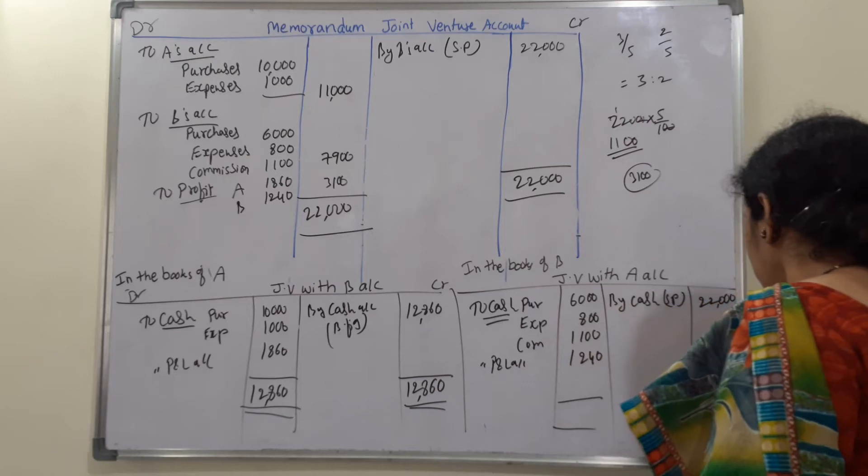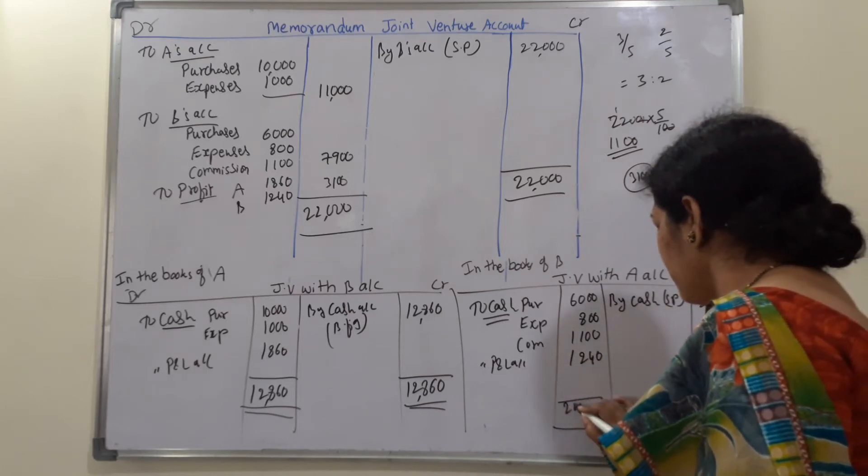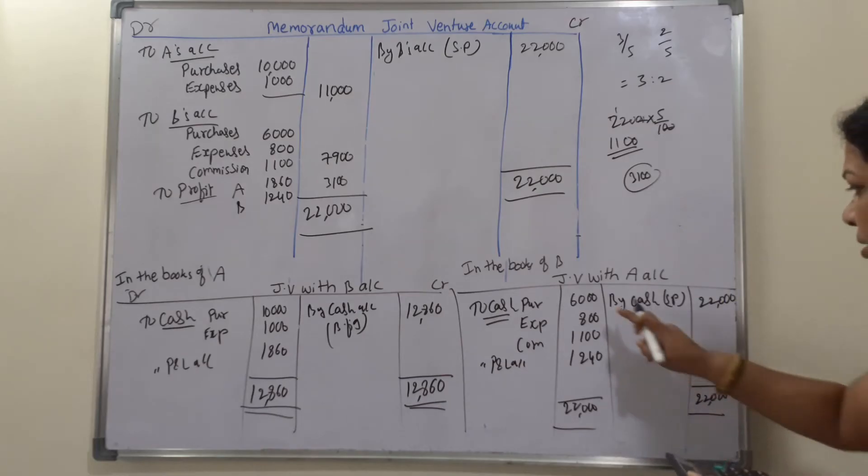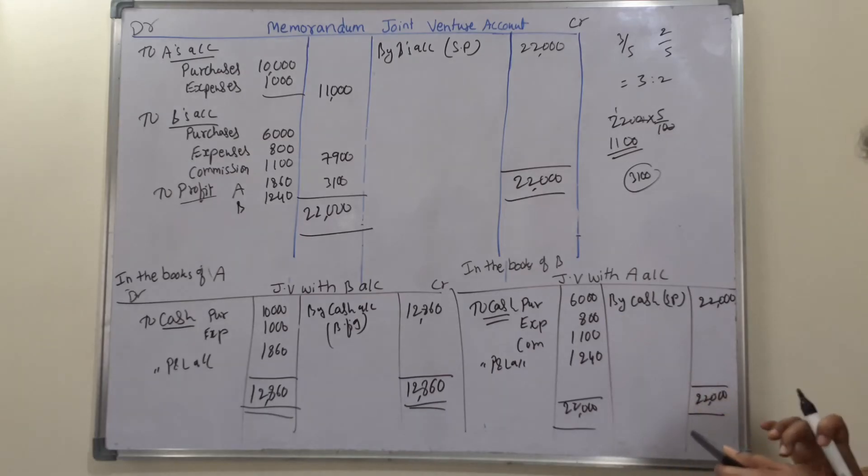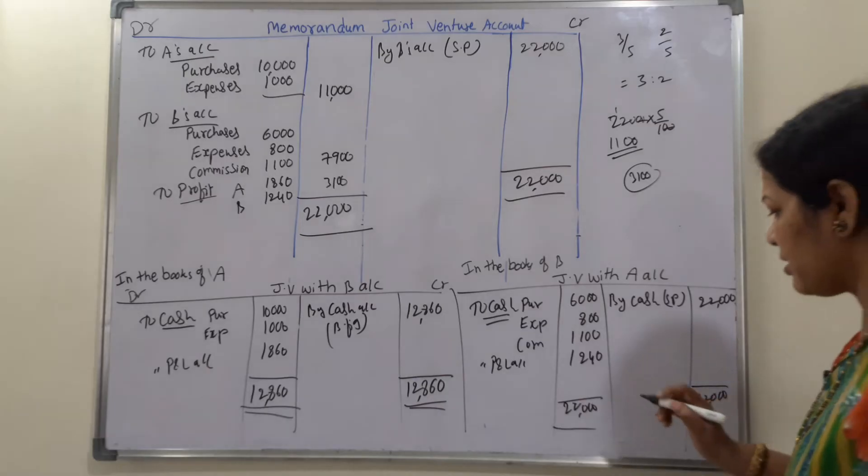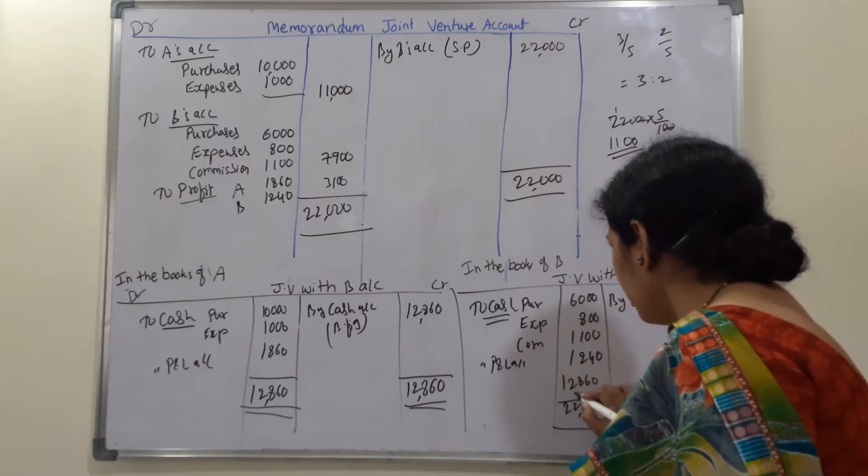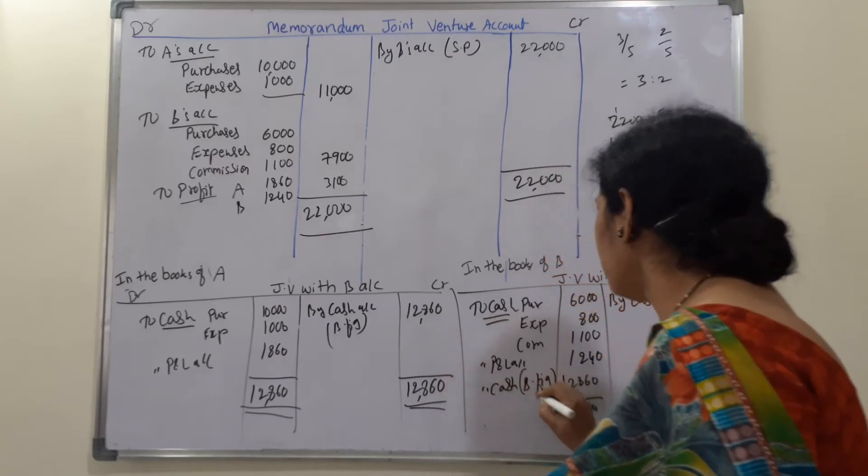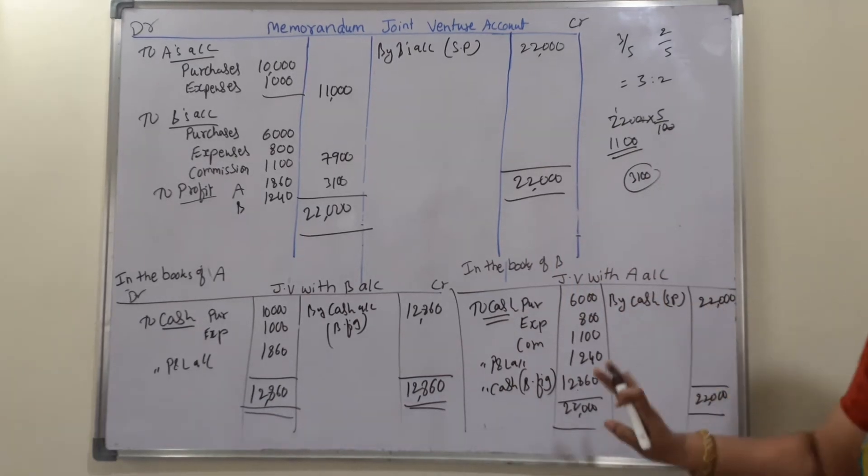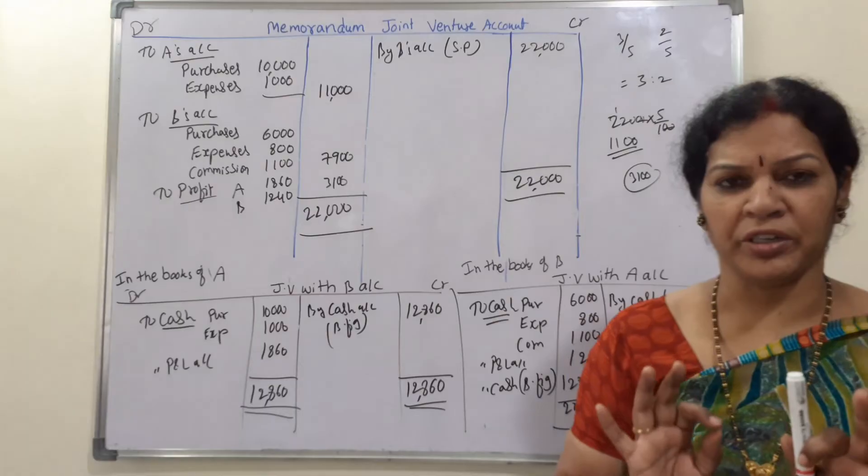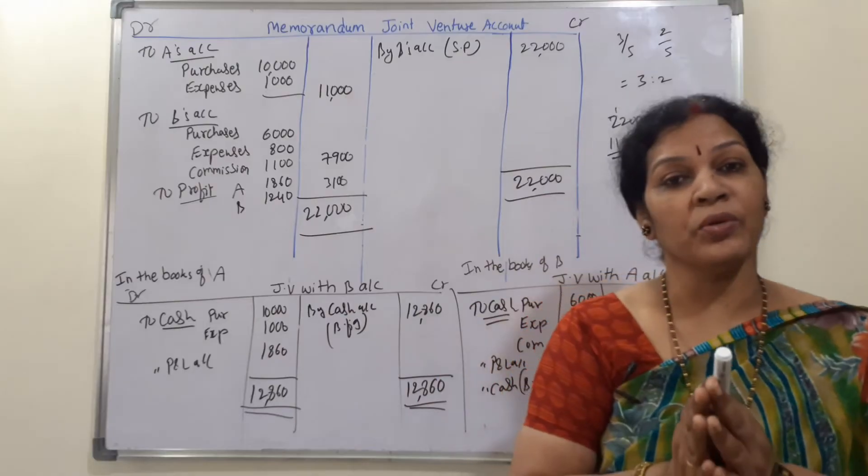And profit to profit and loss account, profit is here 1,240, B's 1,240. And also credit side we have sales, so we will say by cash, cash sale proceeds 22,000. Now if we close the account, 22,000 minus all this, we will see: 22,000 minus 6,800, we will take at a time, minus 1,100, minus 1,240, 12,860. We say it as to cash. That's all, this is the problem.